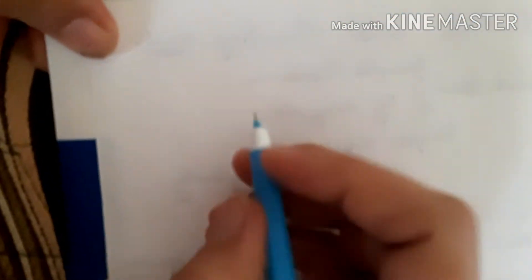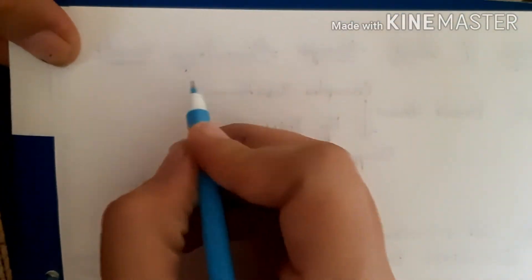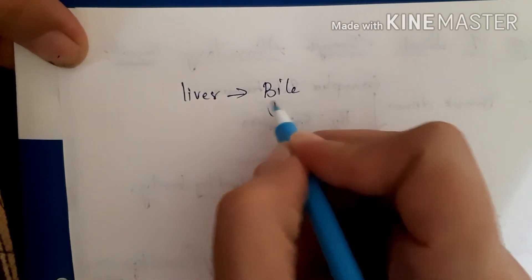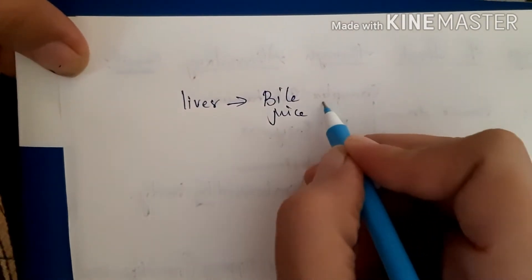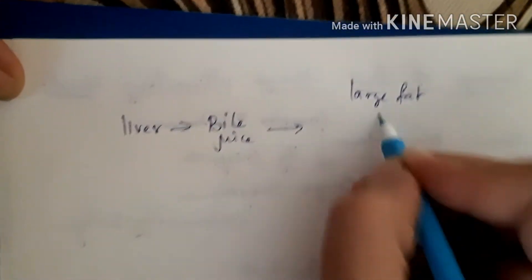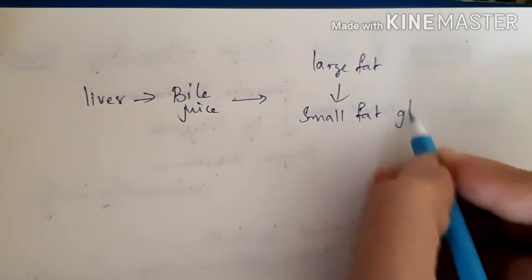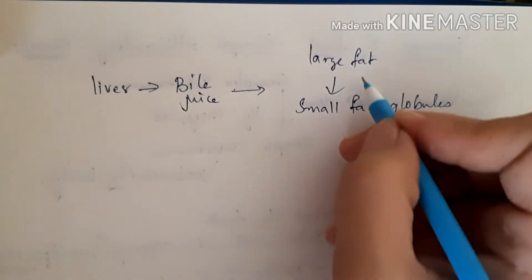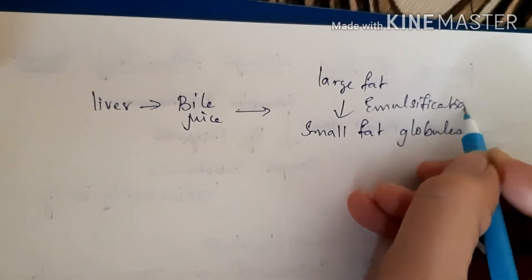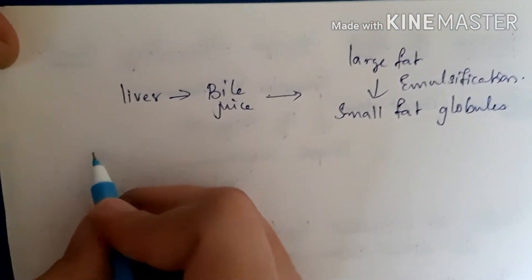Now let us study what happens in the small intestine. First, let us discuss about the liver. The liver secretes bile juice. Bile juice breaks down large fat into small fat globules. This process is called emulsification.